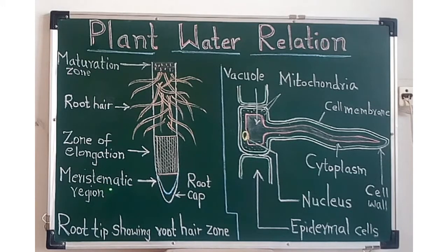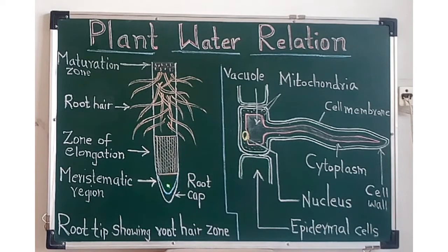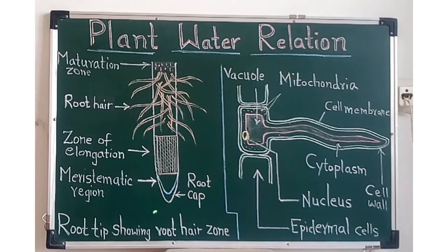The first region is the meristematic region, also called the region of cell division. In this region, meristematic cells are present which undergo the process of cell division and continuously produce new cells. This region is very delicate and is the growing tip, hence it is protected by the root cap.